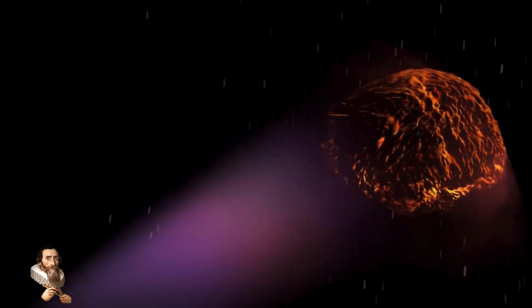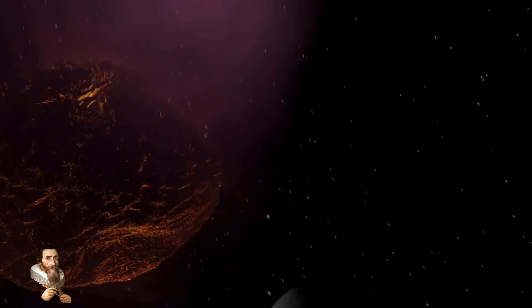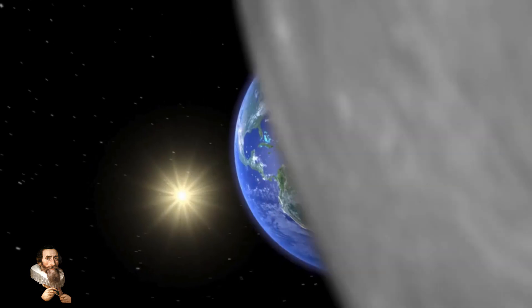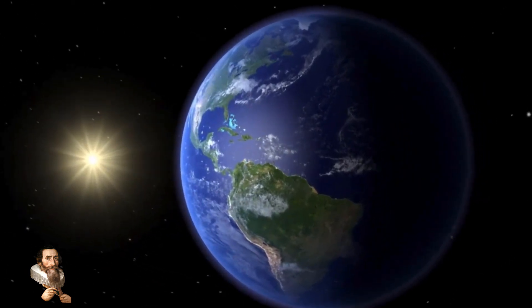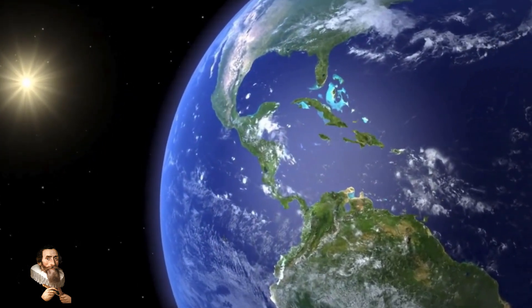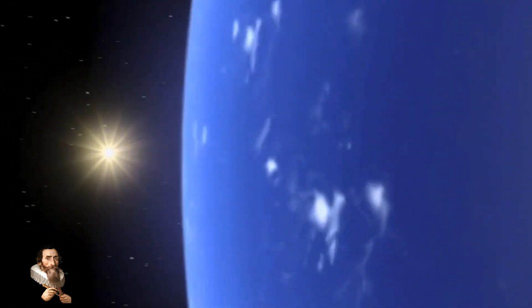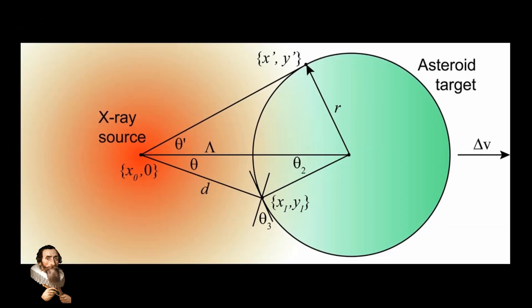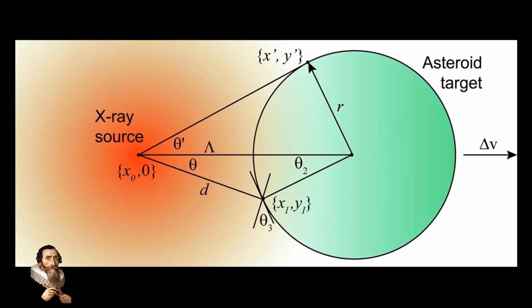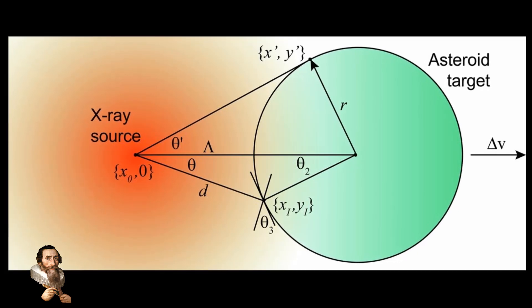The use of X-rays from a nuclear explosion to deflect an asteroid represents a promising avenue for planetary defense. While there are still many technical issues to overcome, recent experimental evidence suggests that this method could provide a viable solution for preventing a doomsday scenario. As our understanding of asteroid deflection techniques continues to evolve, the integration of nuclear technology might one day play a crucial role in safeguarding our planet.